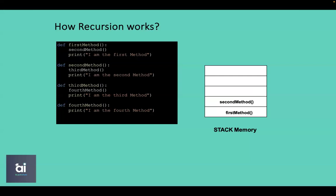The next method to execute comes from the stack memory, which is the second method. The second method is called and its print statement is executed. With that, the second method's execution is complete and it is popped out of the stack. The system then refers to stack memory again, calls the first method, executes its print statement, and with that the first method is complete and is popped out of the stack memory.